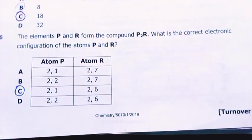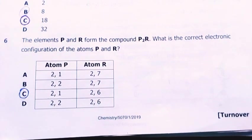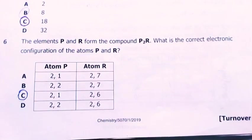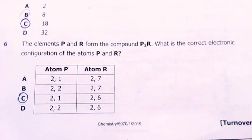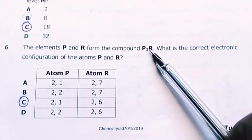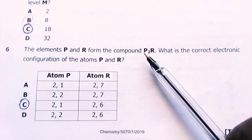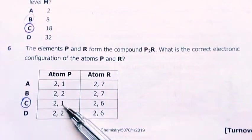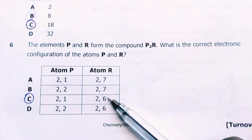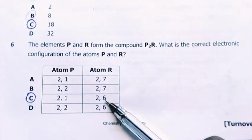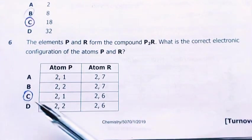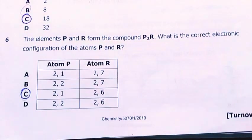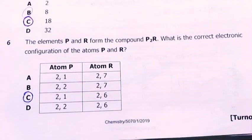Number six. The elements P and R form the compound P2R. What is the correct electronic configuration of the atoms P and R? R needs two of these, meaning the valence of P is 1, the valence of R is 2. When you look at this, the valence of P is 1, then this one the valence is 2 because 8 minus 6 is 2. My answer is C. You have to revise how to determine valency from grade 10 chemistry.